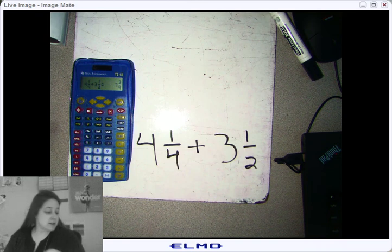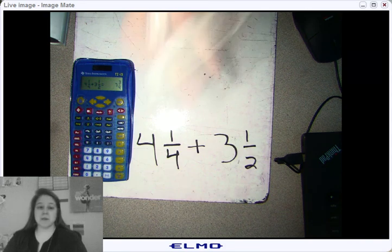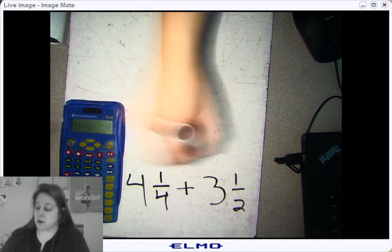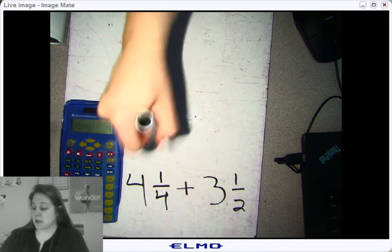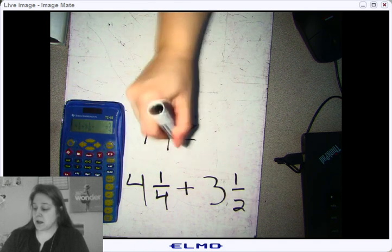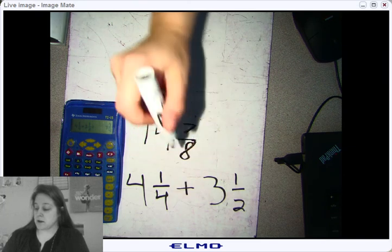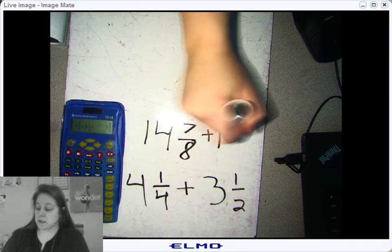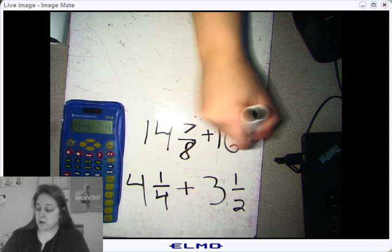Now, you could have done that in your head — no problem. But say I give you a more complicated problem, like 14 and seven-eighths plus 16 and two-thirds.